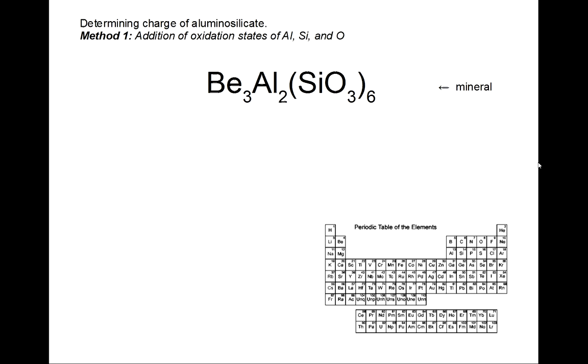Method one includes adding the oxidation states of aluminum, silicon, and oxygen and multiplying them by the number of each atom present in the aluminosilicate. Any other elements are ignored for this addition for determining the charge just of the aluminosilicate itself, so not the beryllium.